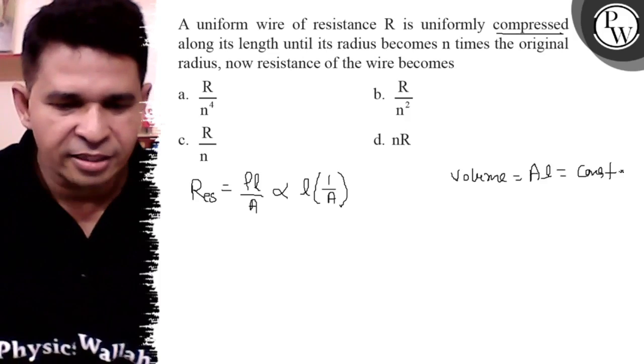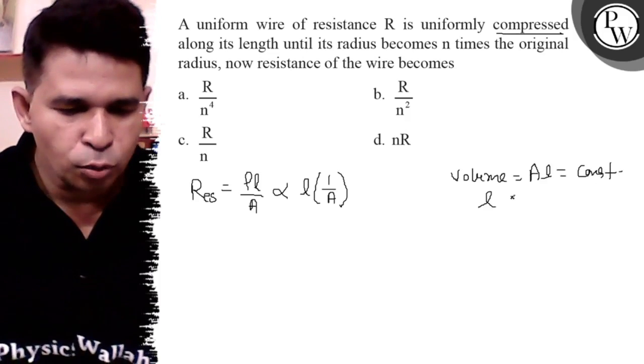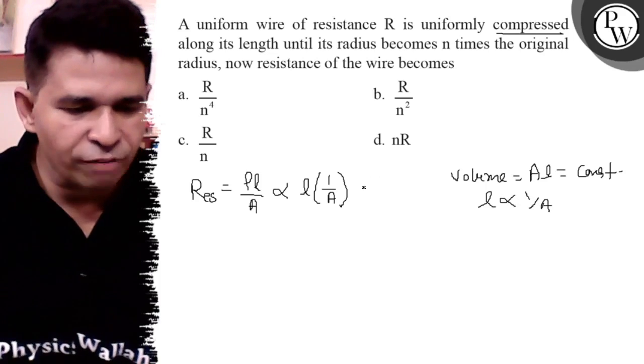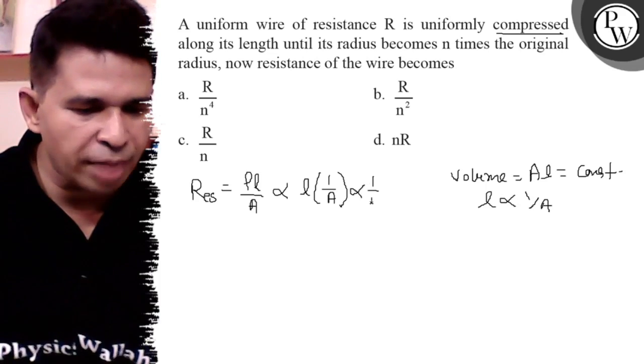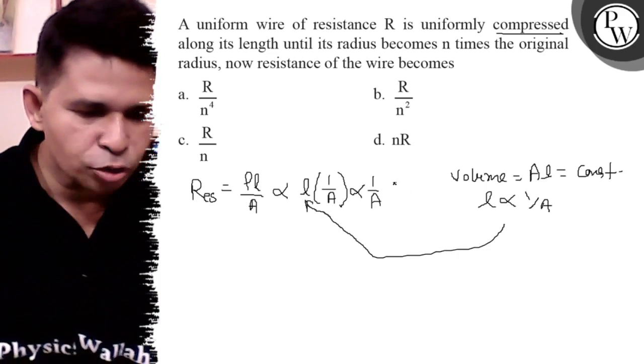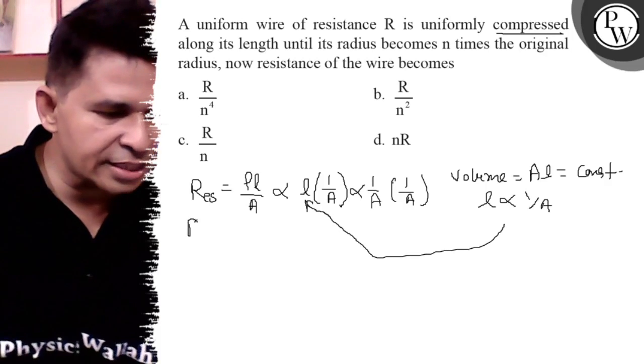So it is a constant and length is proportional to 1 by A. So in place of length we can place 1 by A. From here to here, so resistance is proportional to 1 by A squared.